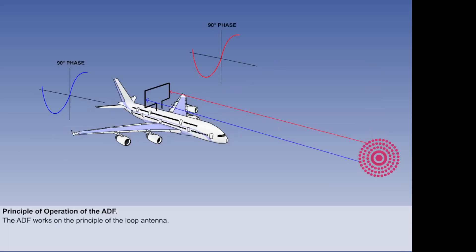The counterpart of the beacon is the airborne equipment, the ADF, and it works on the principle of the loop antenna which we saw earlier. But let's recap.